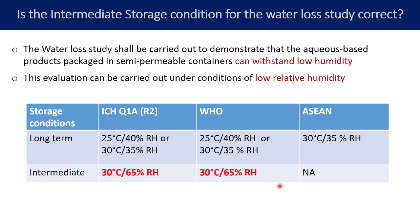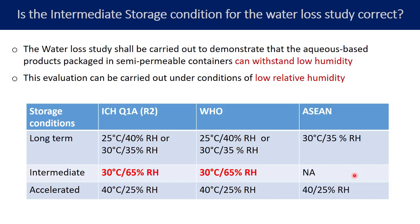ASEAN has not given any intermediate conditions as such. For the accelerated storage conditions, the requirement is 40°C and 25% RH. Logically, the reduction in humidity is much appreciated for the accelerated storage condition, because this creates a harsher condition with respect to water loss — one can expect greater water loss at 25% RH compared to 40% RH or 35% RH. WHO as well as the ASEAN guideline has mentioned similar accelerated storage conditions.